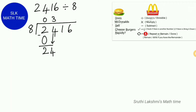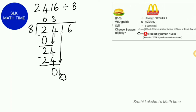We multiply 8 times 3, then do 24 minus 24, which gives us 0. Then we check if there is another number — there is — so we bring down 1. Next, we see how many 8s can fit in 1: zero. So we write a 0 and multiply 8 times 0, which gives us 0. Then 1 minus 0 is 1.